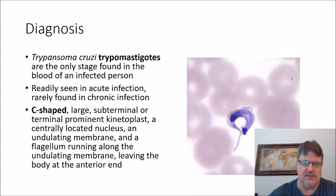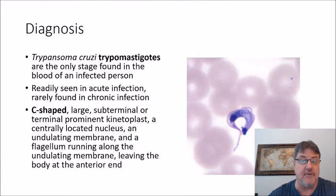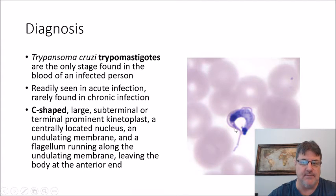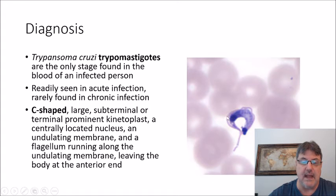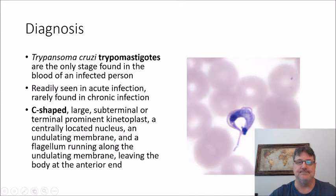There are similarities to the agent that causes African sleeping sickness, but T. cruzi has a very distinguished C-shape — very characteristic. It has a large, subterminal, prominent kinetoplast, a centrally located nucleus, the undulating membrane, and the flagella that runs all the way to the anterior end of the body. So it's very characteristic — very hard to miss.